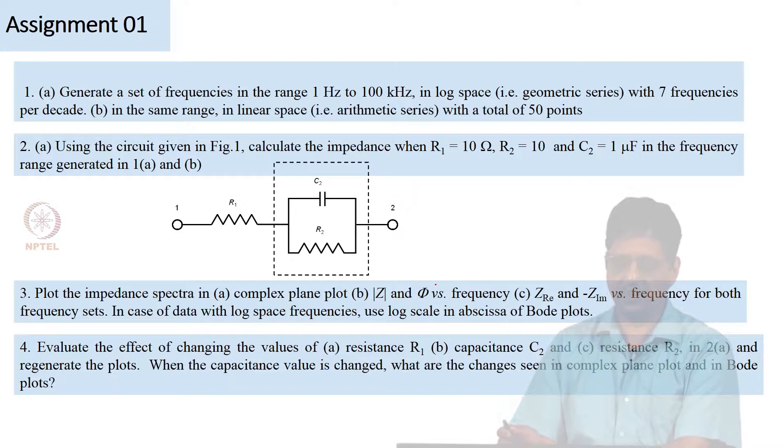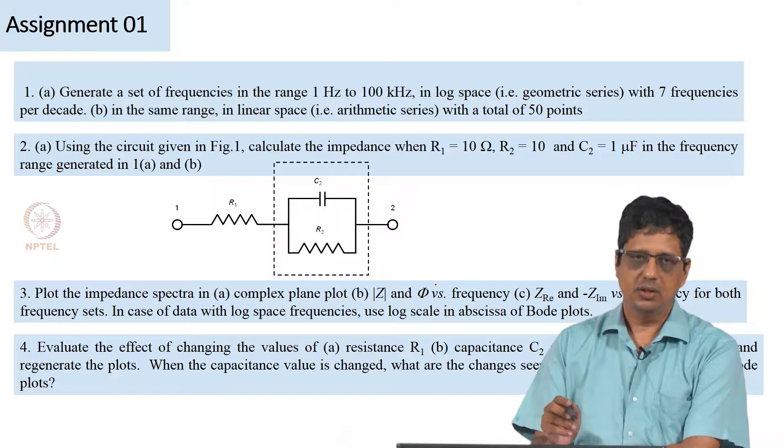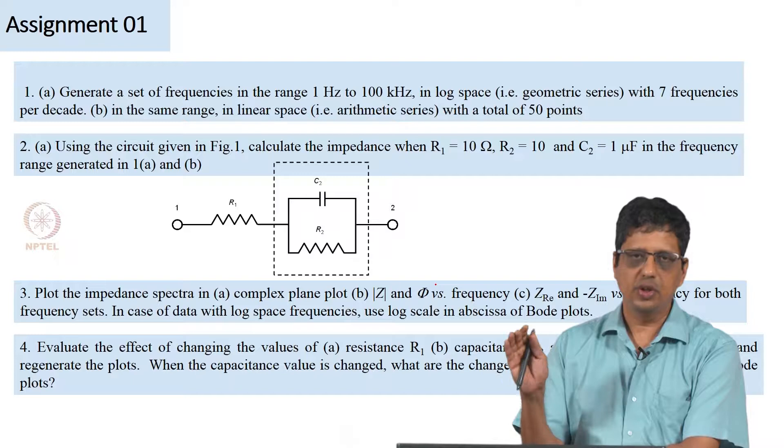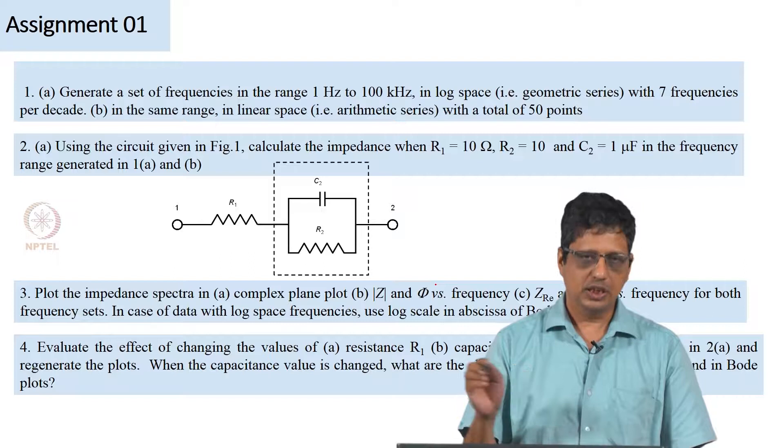The idea is for you to understand that if you use linear space, then many of the features will not be clear. But I would like you to try that and get that information or see that when you span a frequency of 1 hertz to 100 kilohertz in logarithmic or geometric series, then you would have few frequencies in 1 to 10 hertz, few in 10 to 100, few in 100 to 1000, 1000 to 10,000, 10,000 to 100,000. Whereas, if you do in linear scale, most of them will appear only in the large frequencies and you will see very few in the below 100 hertz.